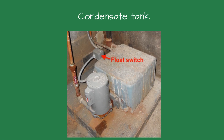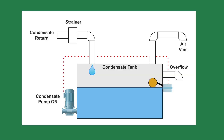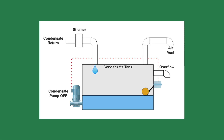The condensate tank is typically much smaller than a boiler feed tank. Inside the tank is an internal float that controls the pump operation. As the water level rises in the tank, the float switch starts the pump and pumps the condensate. When the water level in the tank drops, the pump is switched off.